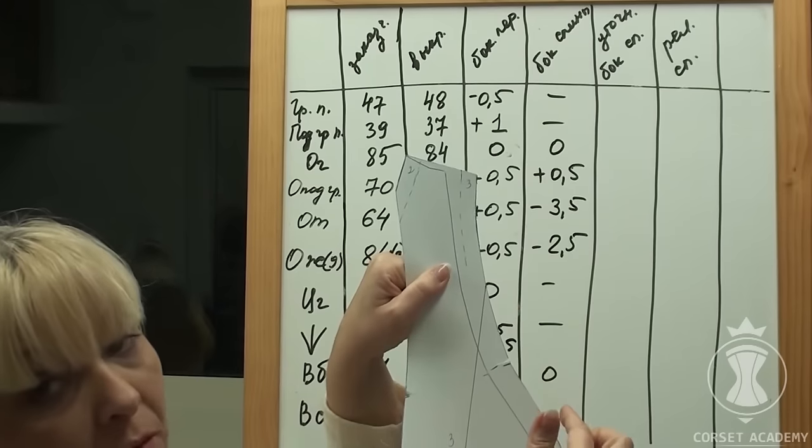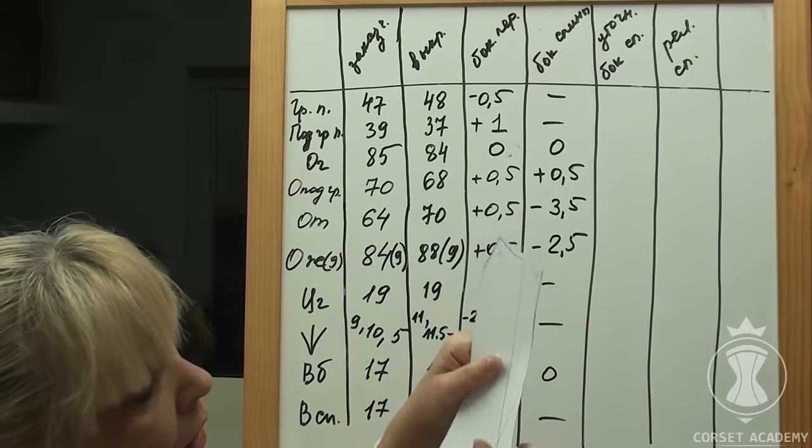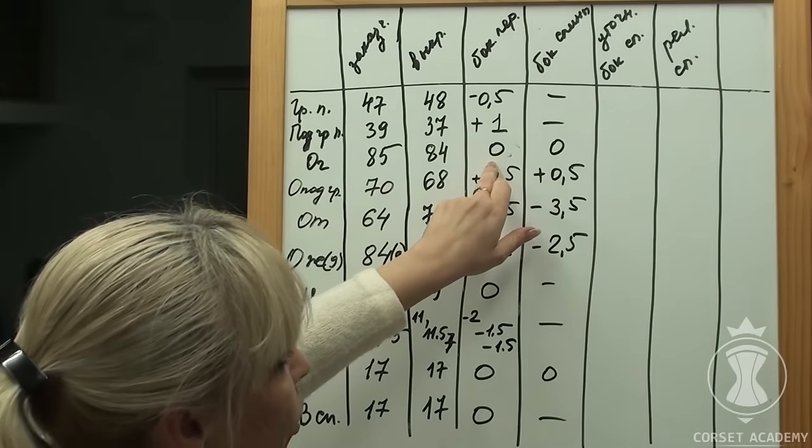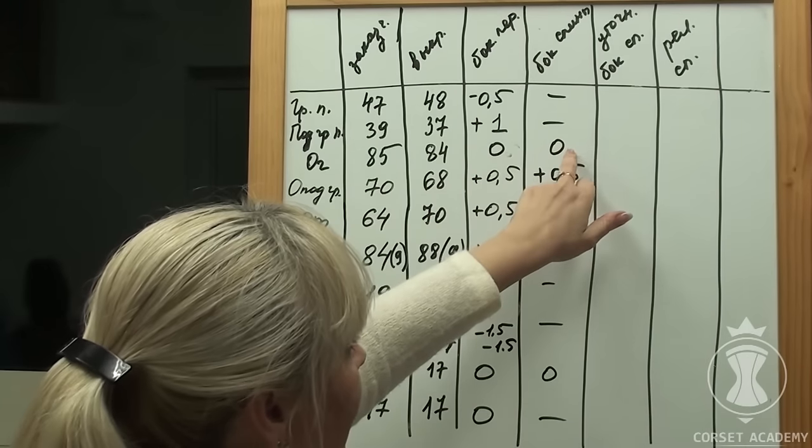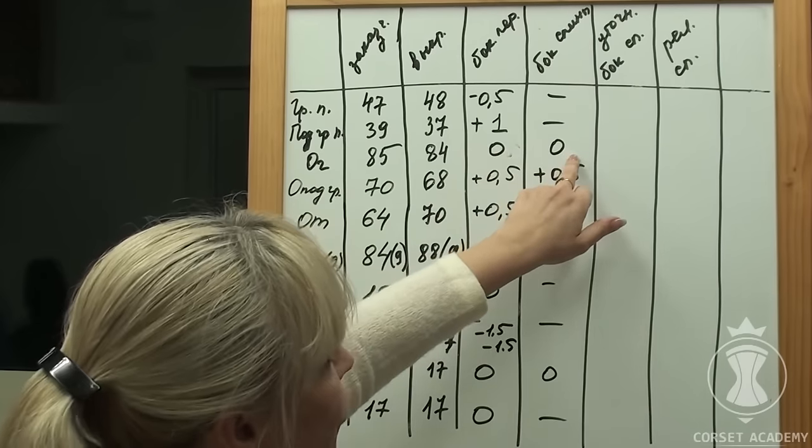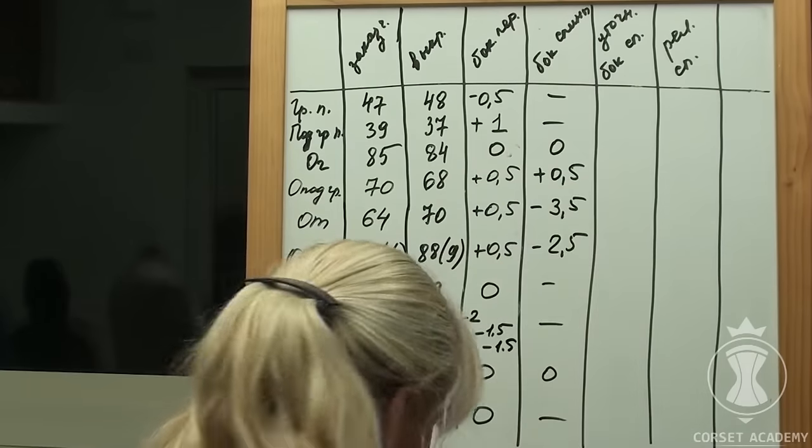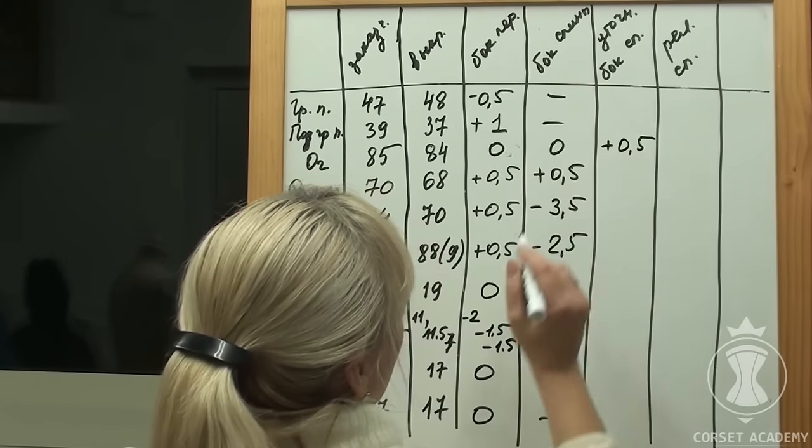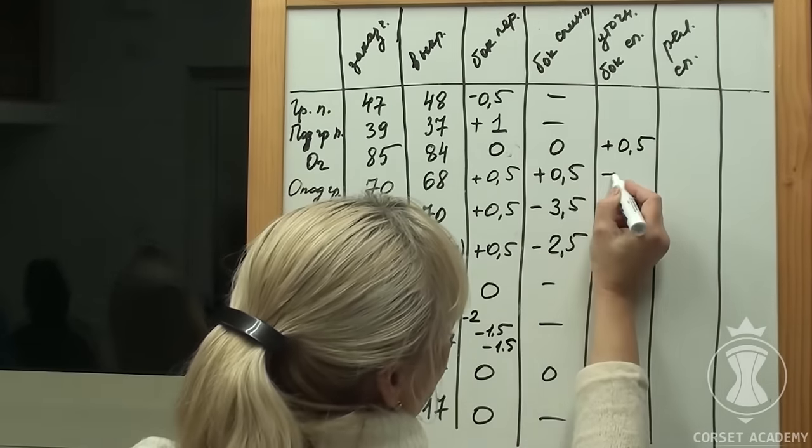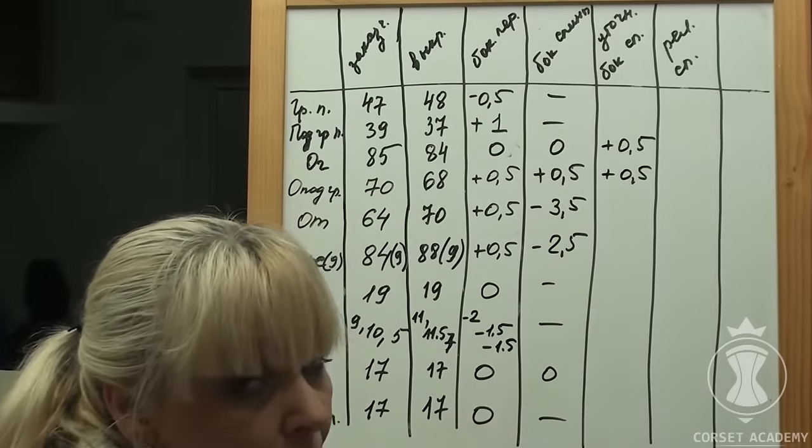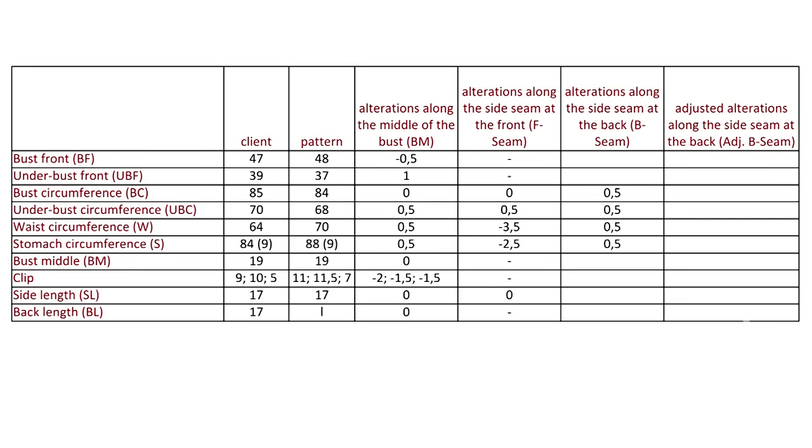It is no big deal at all. If you take the side piece of the front and look at the shape of its side seam line, you will see that it is perfectly fine if we leave it as is at the bust level, add 0.5 cm under the bust, and prolong the line downwards. The side seam will be straighter, that's all.